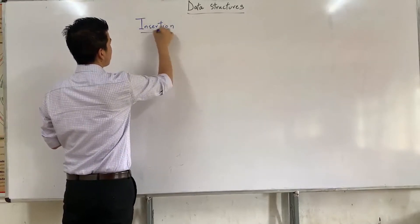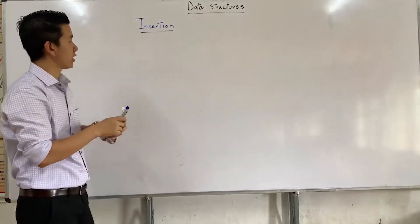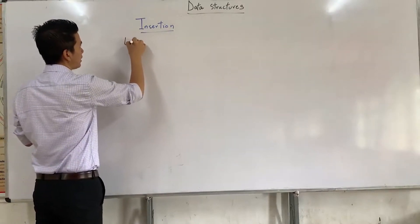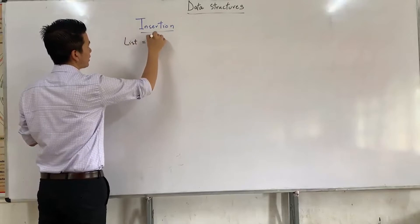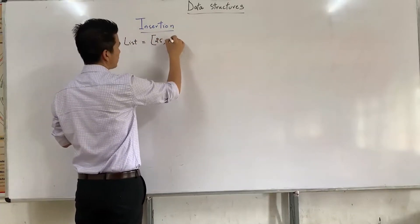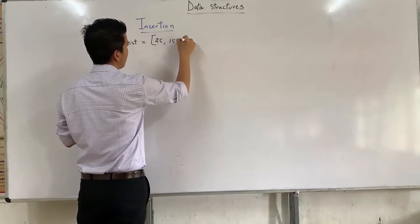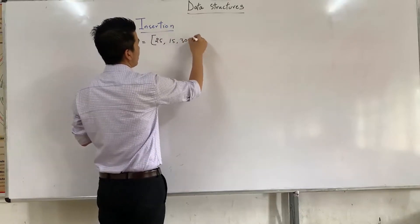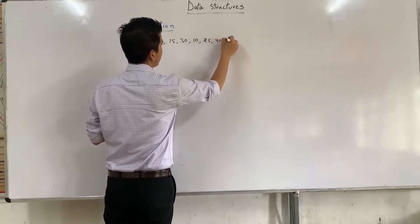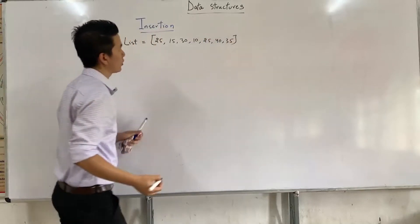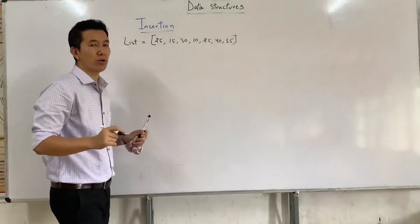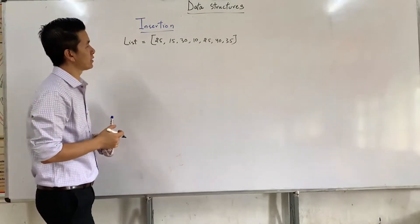This will be the third method of sorting numbers. Again we'll have a list: say 25, 15, 30, 10, 25, 40, and then 35.